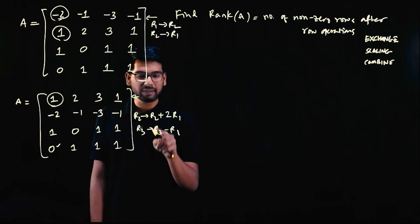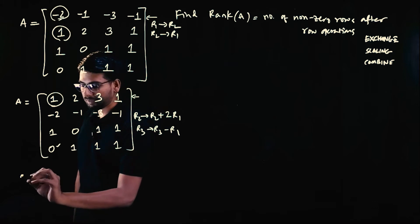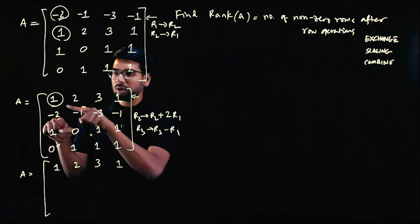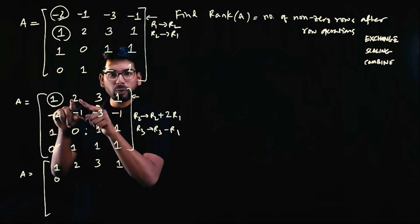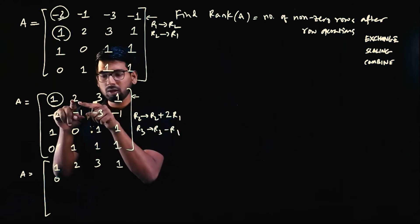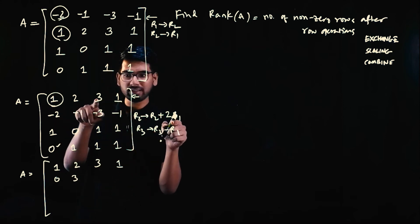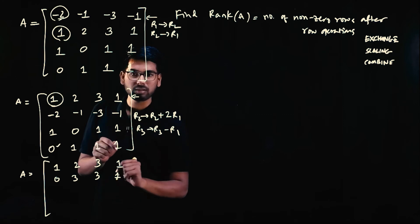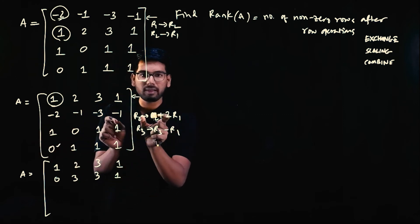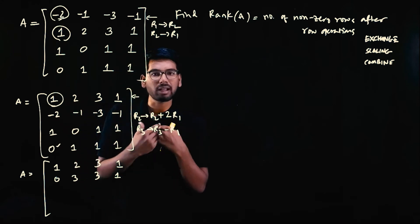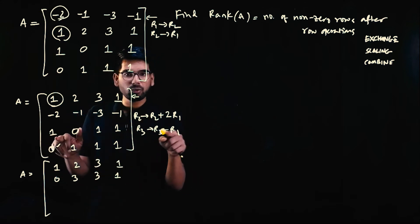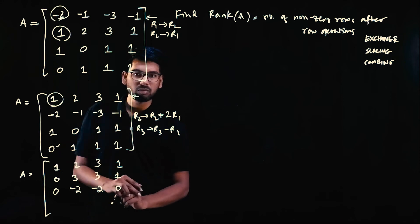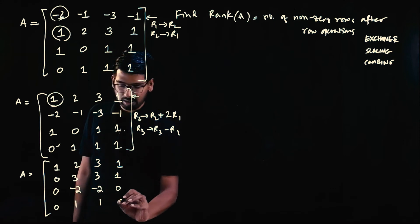Using these row operations, the matrix becomes: first row unchanged as [1, 2, 3, 1]. Second row R2 + 2*R1 gives [0, 3, 3, 1]. Third row R3 - R1 gives [0, -2, -2, 0]. Fourth row unchanged as [0, 1, 1, 1].